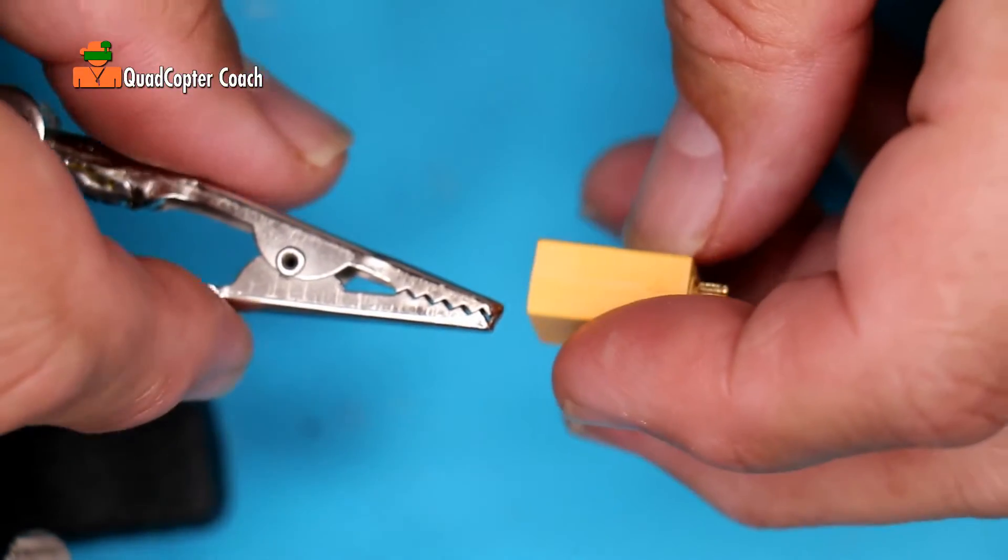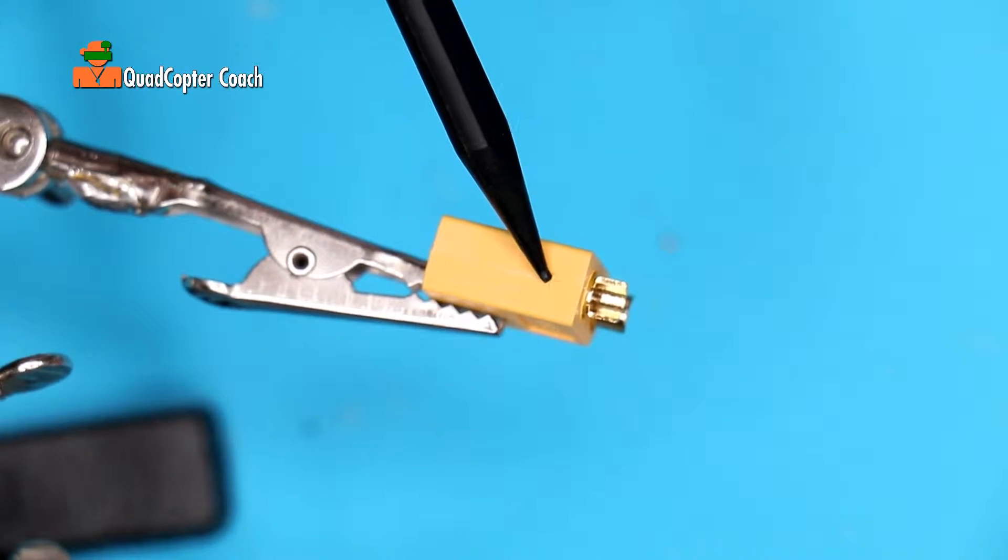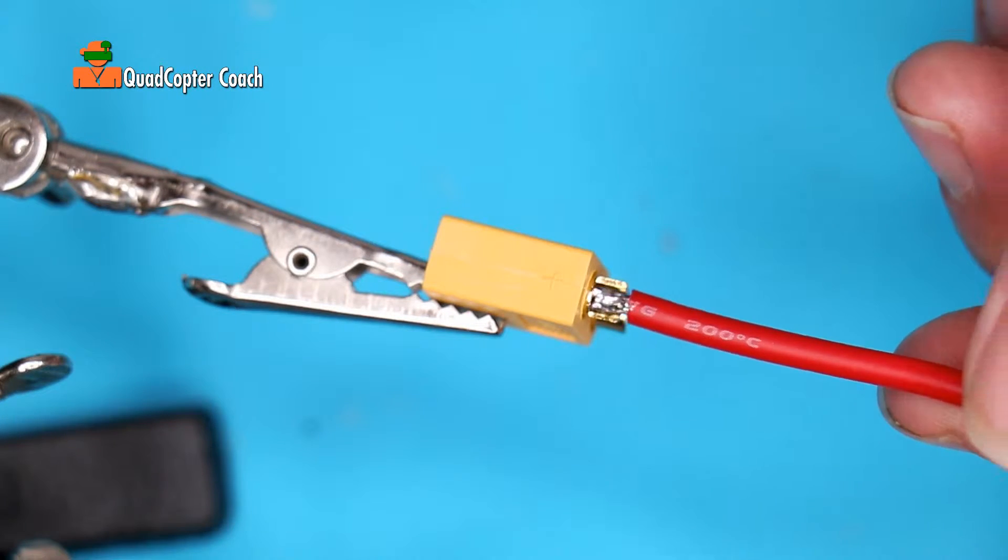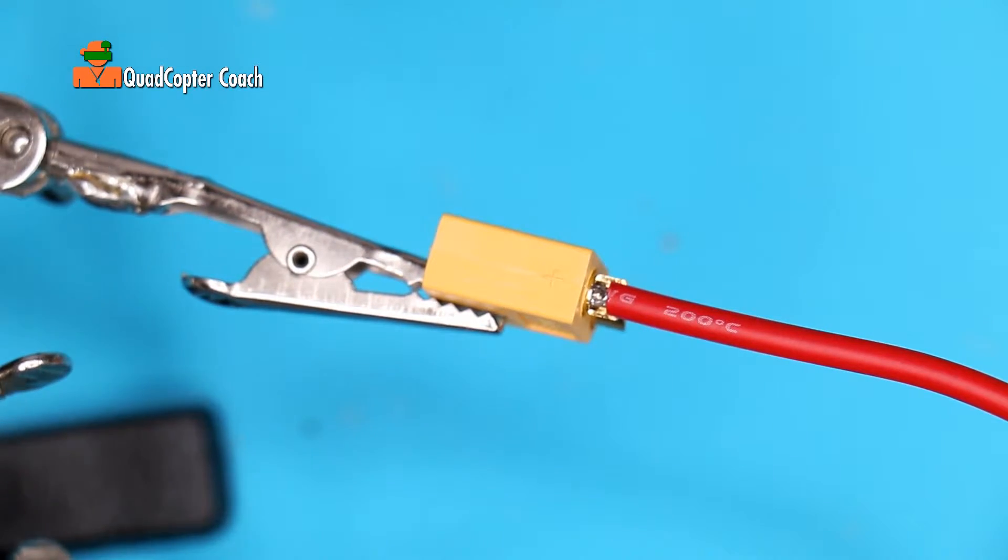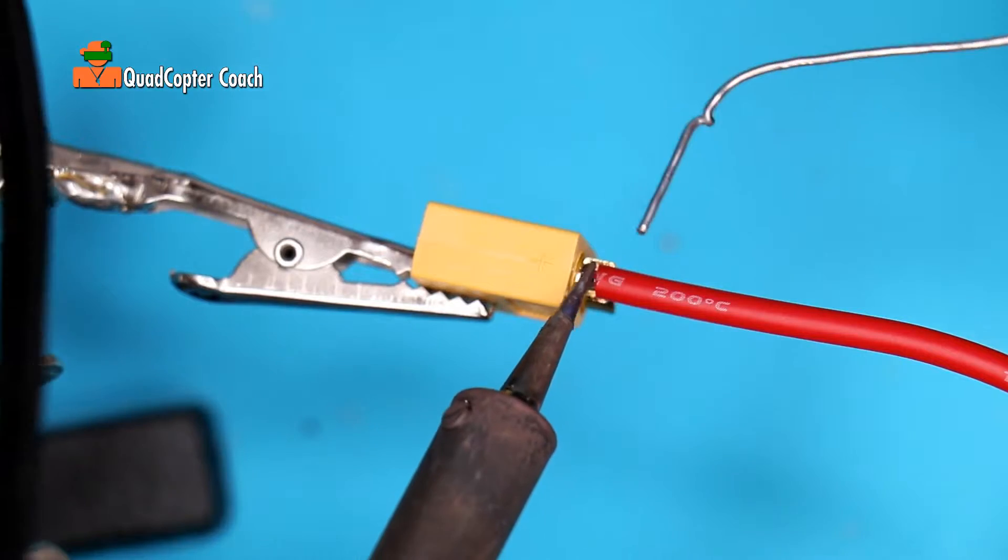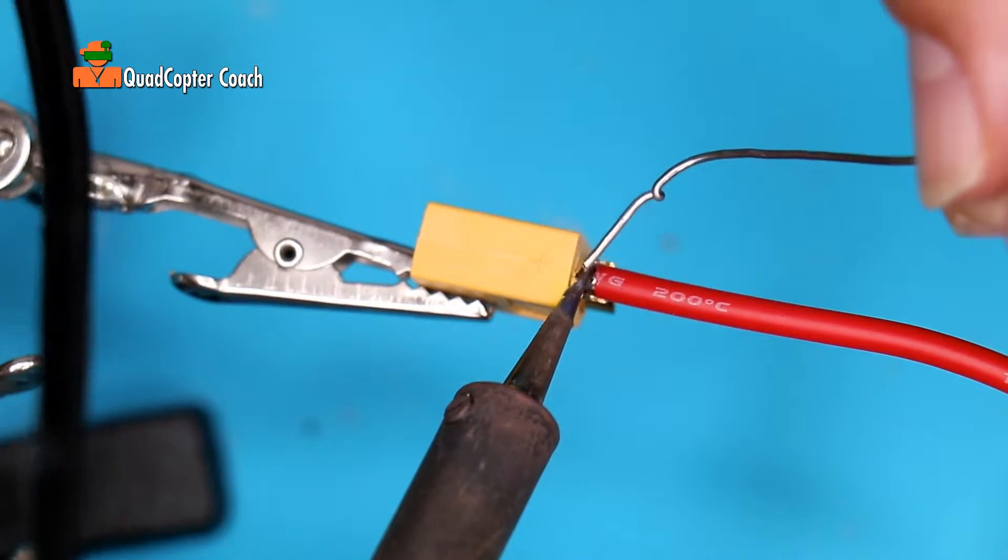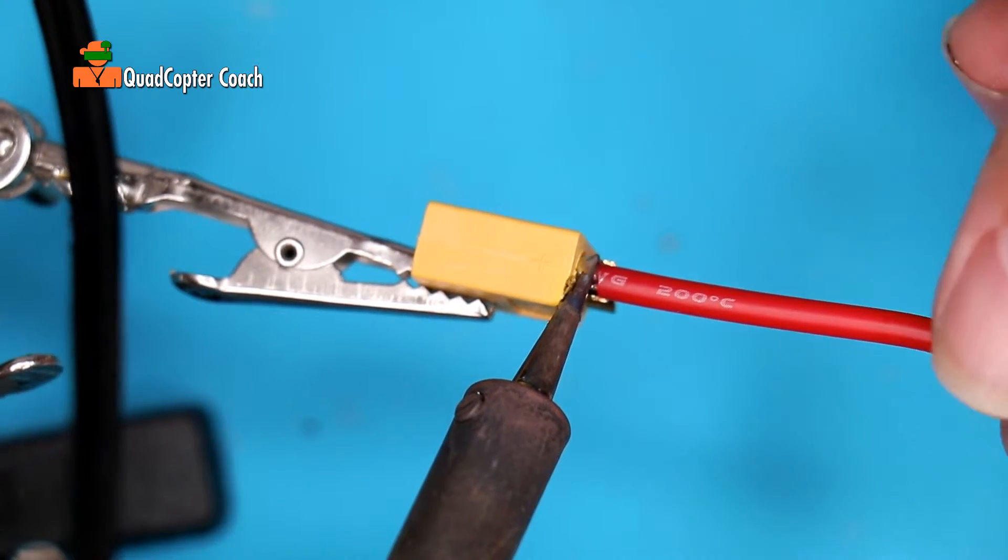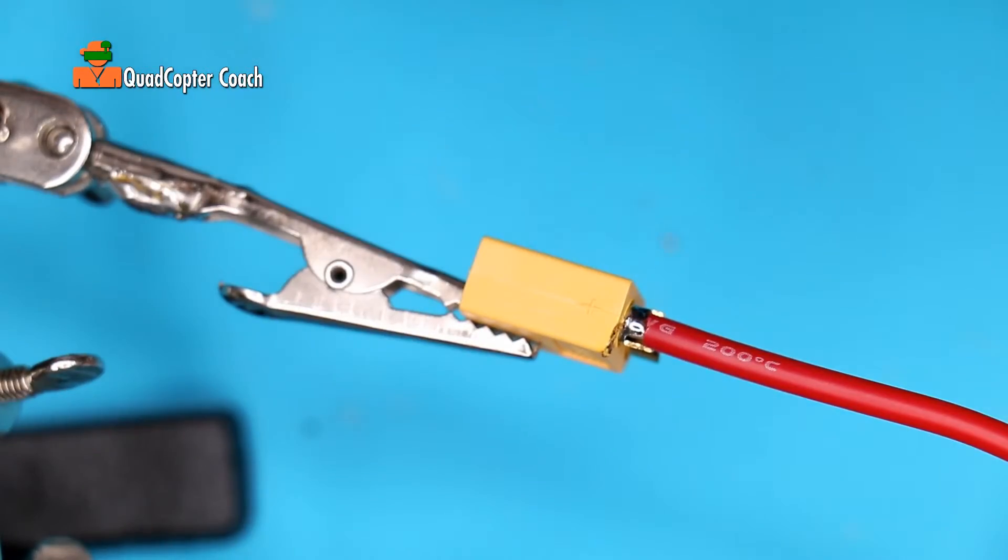Using your helping hands, place your XT60 connector in place. Notice the positive side. We're going to start with the positive, and that would be the red wire. Place your pre-tinned wire right in the hole there. Give it just a little bit of a gap. And take your soldering iron, apply some heat. If you apply heat too long, you might melt something you don't want to. And that should be good. Give it a little tug. It's in there secure.